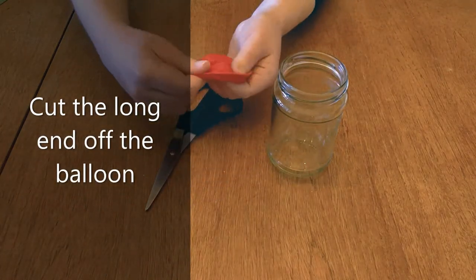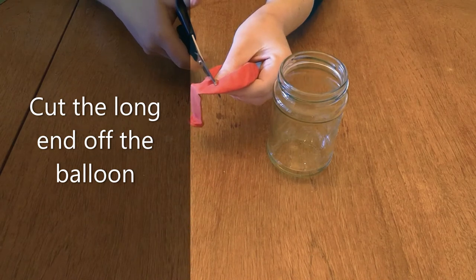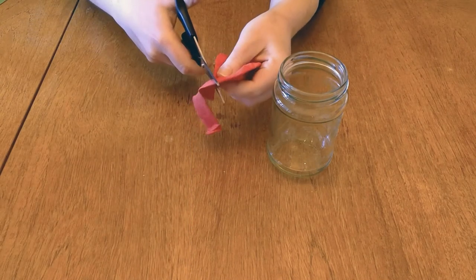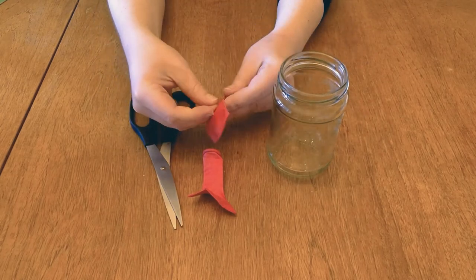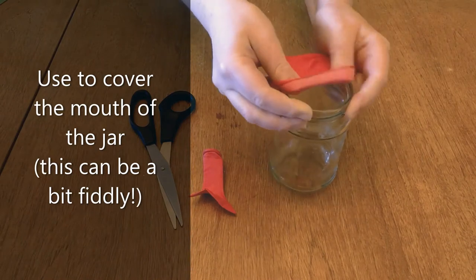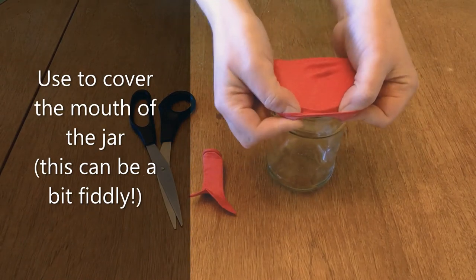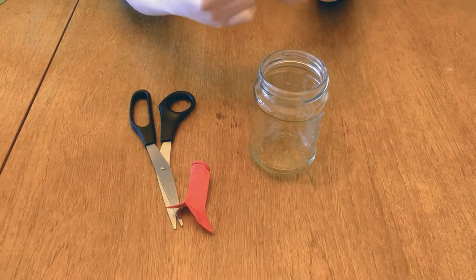To start, you want to cut the long end off of the balloon. This is going to give you the round bit at the top, which you're going to use to cover your jar. This bit can be a bit fiddly, so you'll want to check how big your jar is compared to the size of your balloon. It might take a couple of goes to get that bit of the balloon on top of your jar. You can see I'm having a bit of trouble here.